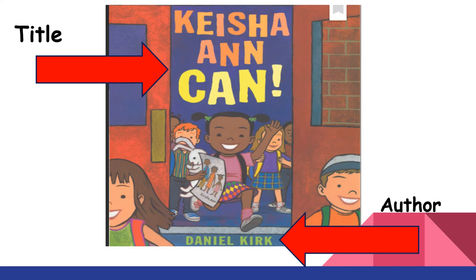Another thing to look at before you start reading the book is the author. In this case, the author is Daniel Kirk. The author is the person that writes the book. So again, the title is Keisha Ann Can, and the author is Daniel Kirk.